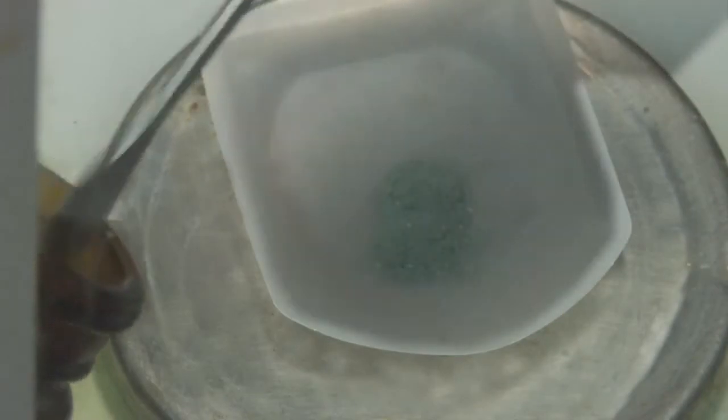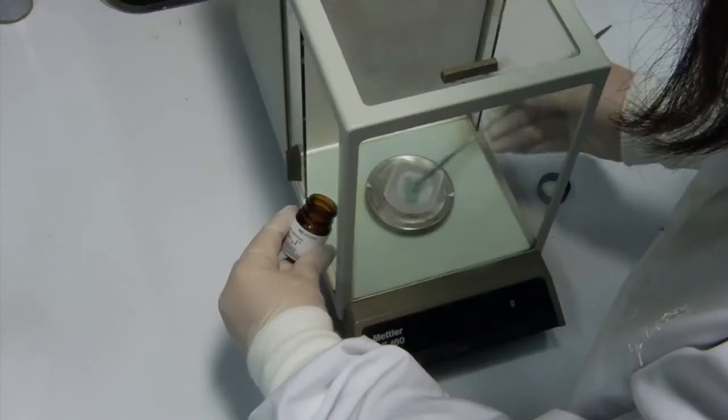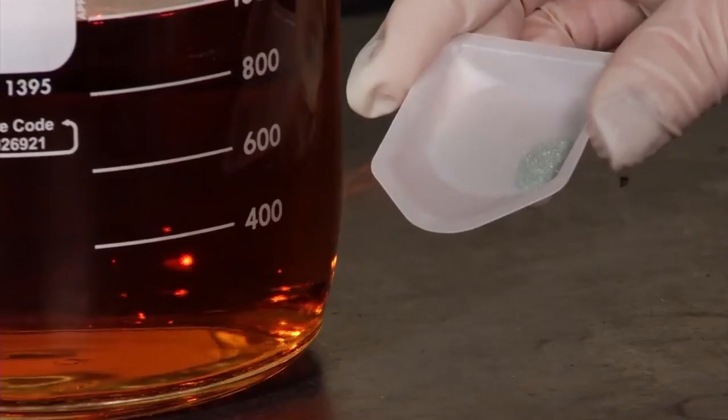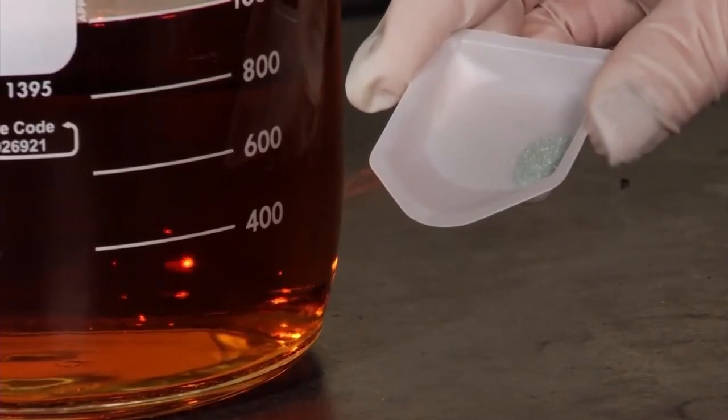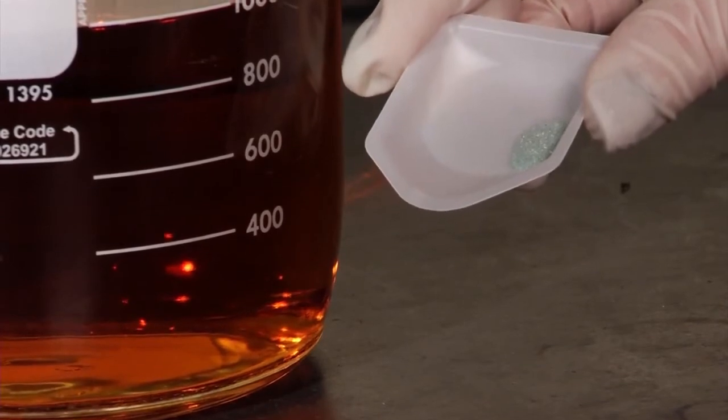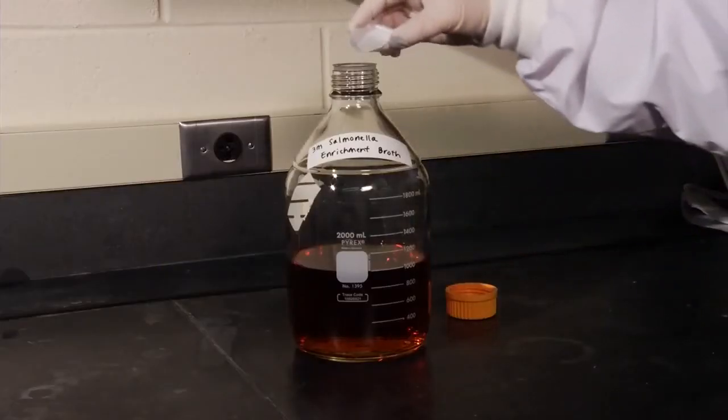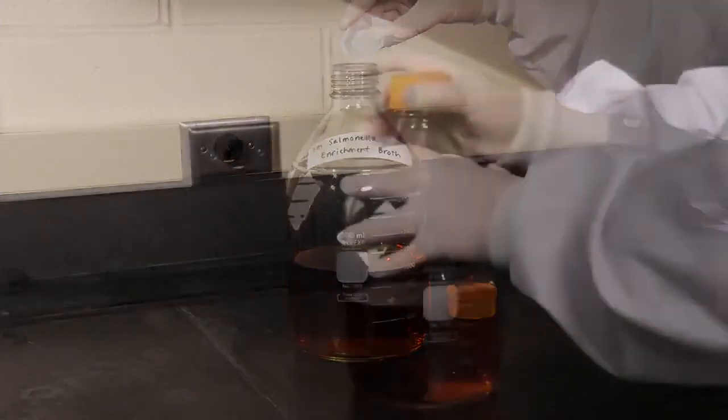To prepare the 3M Salmonella Enrichment Supplement, weigh 50 milligrams plus or minus 2.5 milligrams of the supplement using an analytical balance. Temper the sterilized base to 20 to 42.5 degrees Celsius, then add 50 milligrams of supplement. Shake the base supplement container vigorously to effectively dissolve and mix the supplement with the base solution.